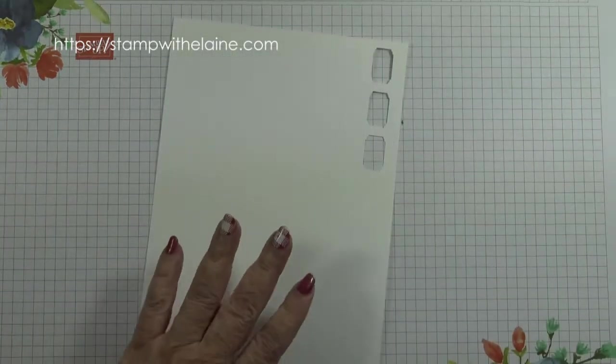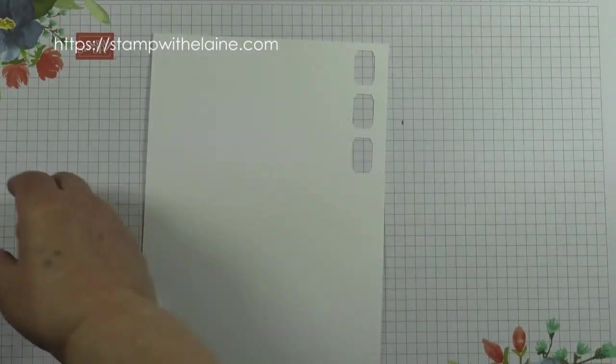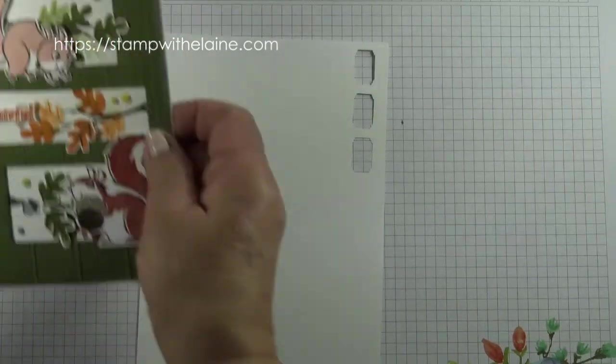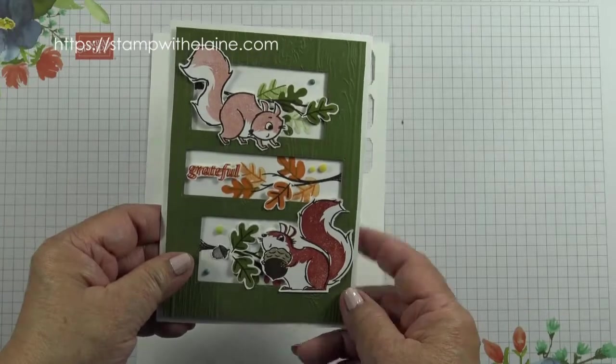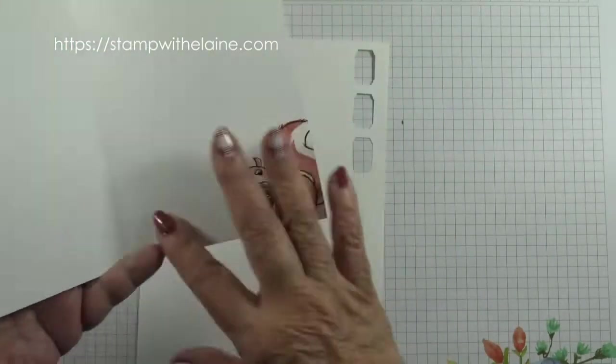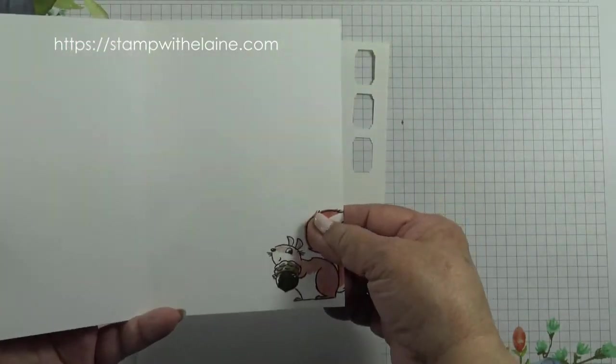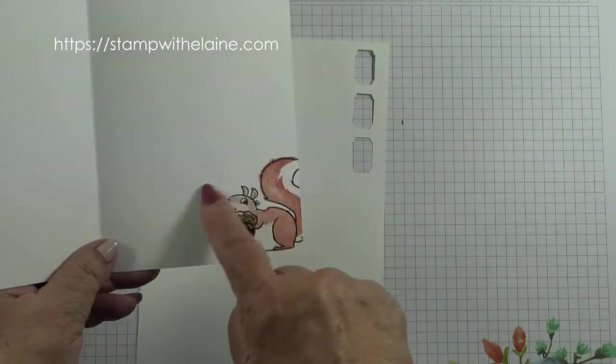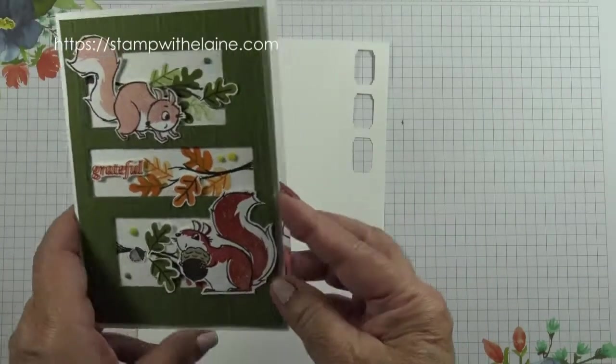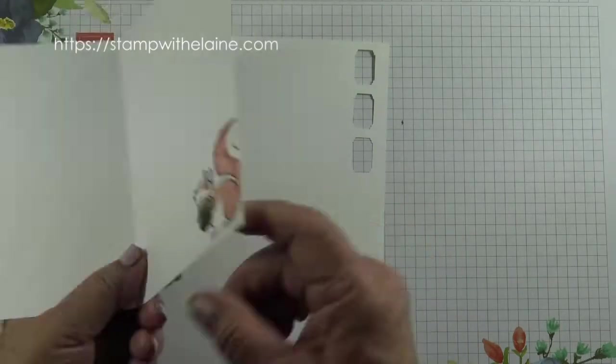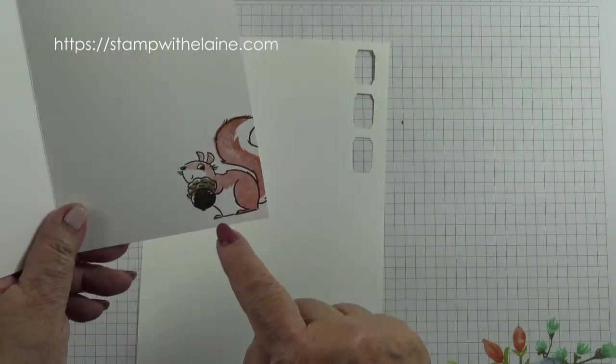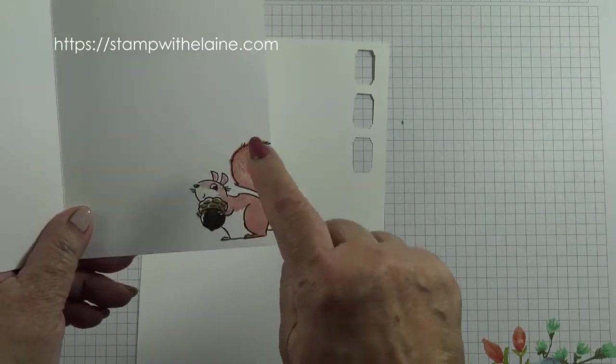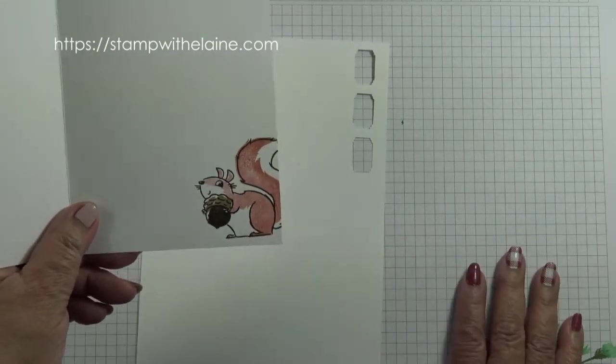And then you need some scraps of basic white so you can stamp your squirrels and leaves and fussy cut them. I didn't add an extra piece for inside the card, I just stamped directly onto it because I'm not using alcohol markers so it won't bleed through. This is all two-step stamping.